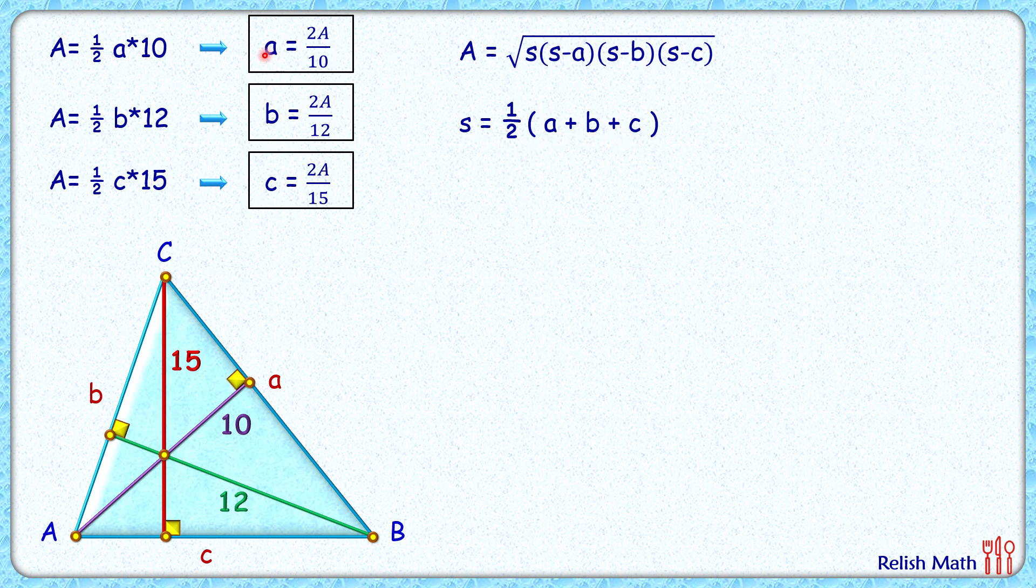Now we can substitute the side lengths: a as 2A/10, b as 2A/12, and c as 2A/15. Taking LCM as 60 and simplifying, we'll get semi-perimeter s as 15A/60.